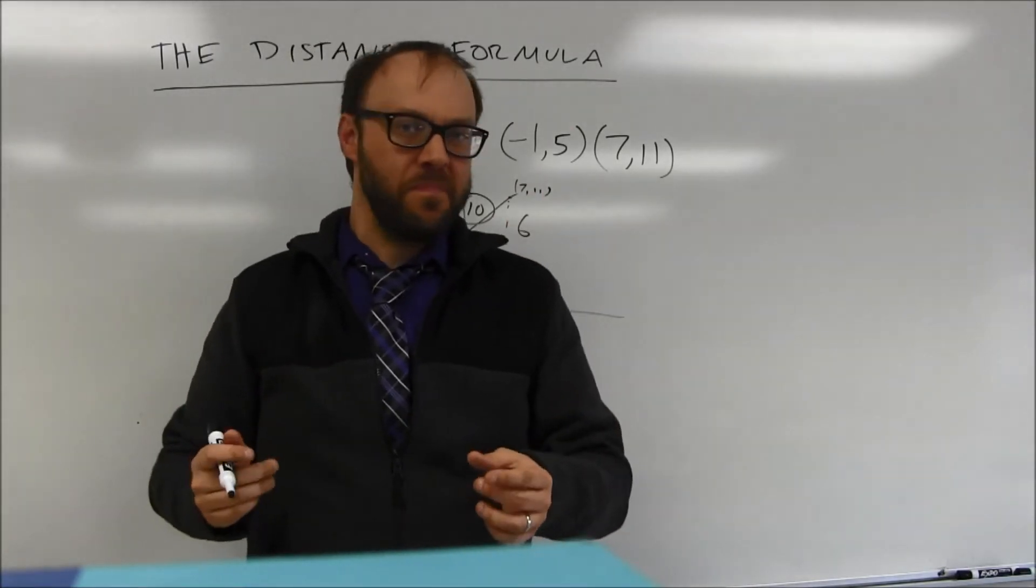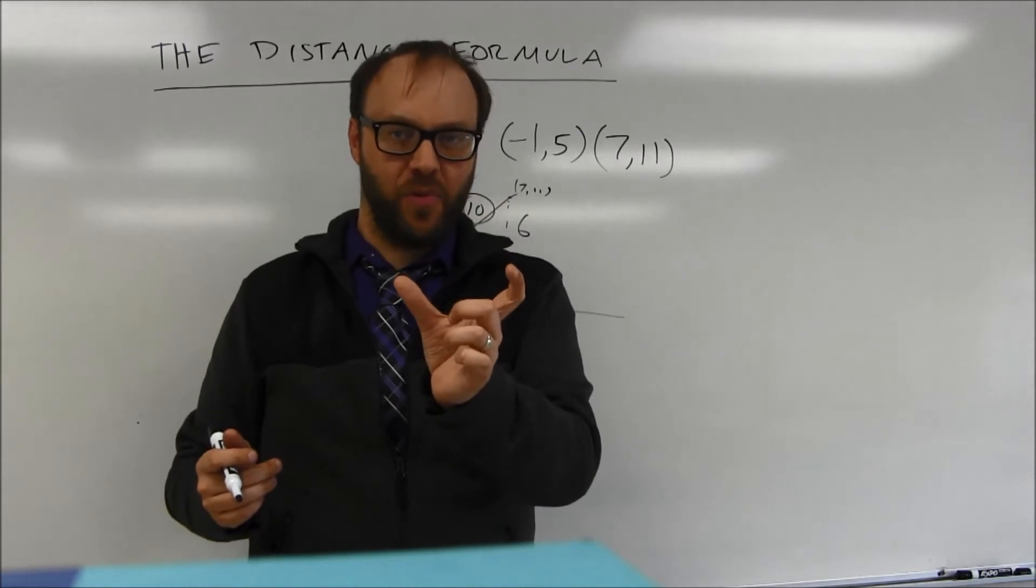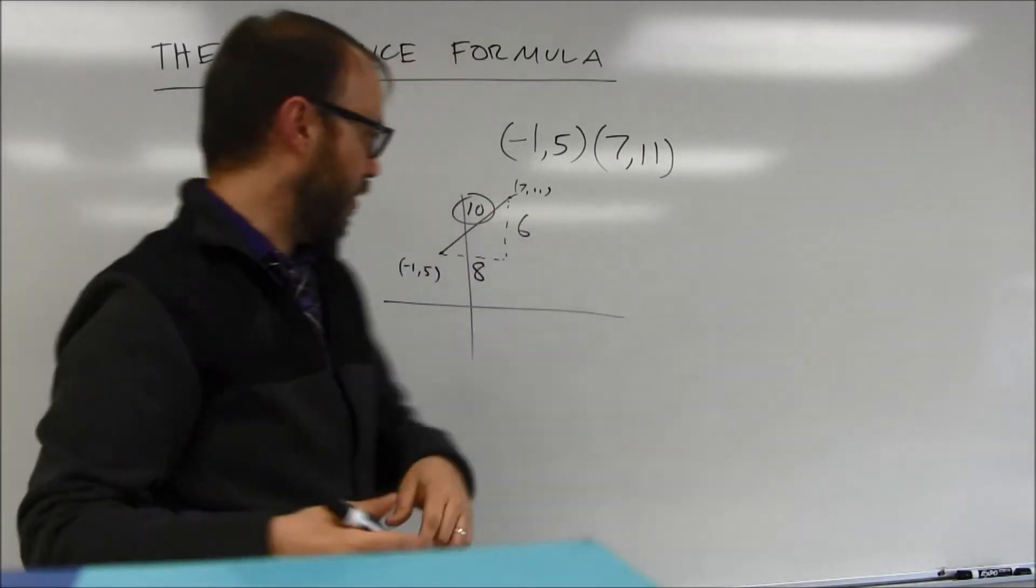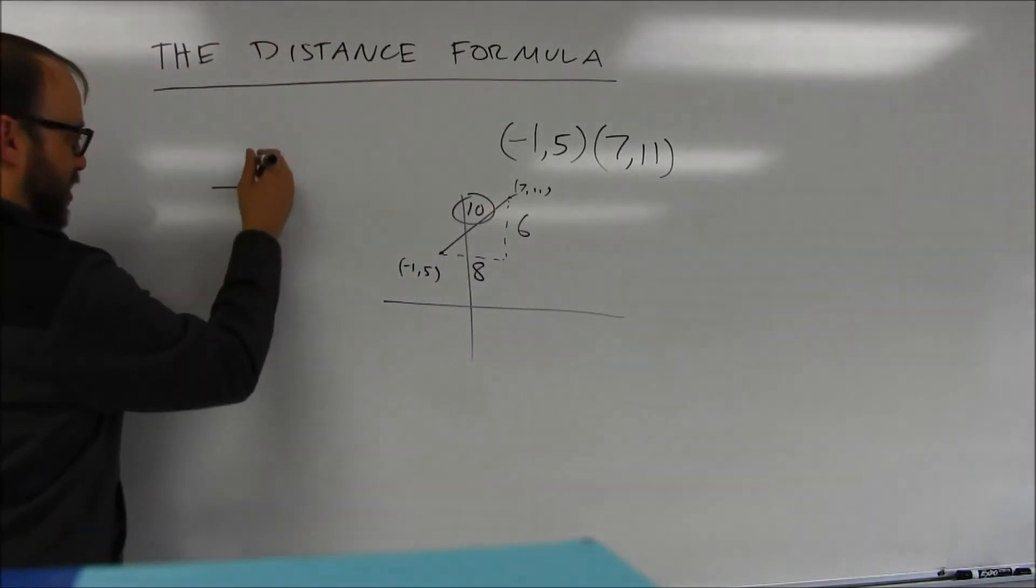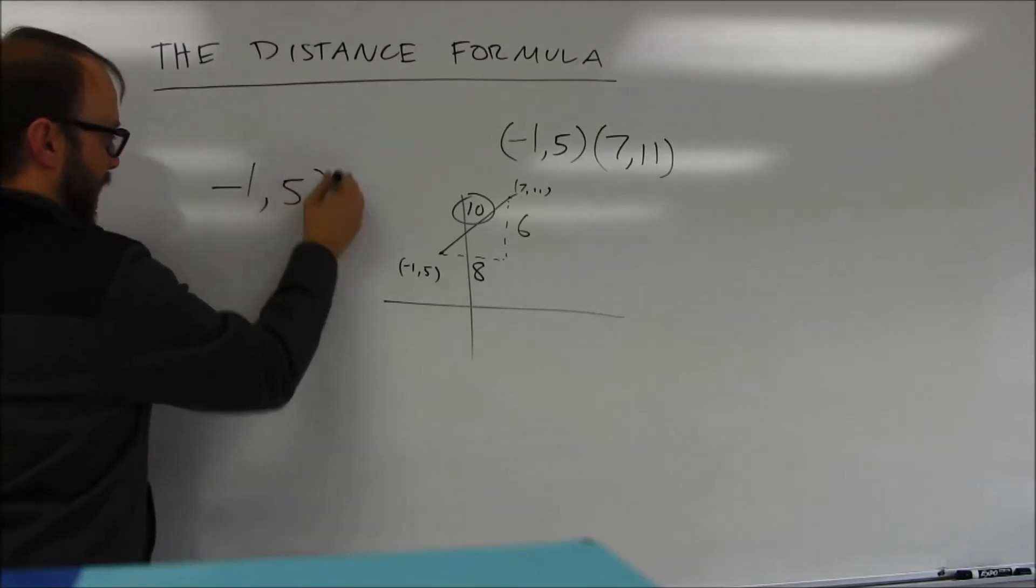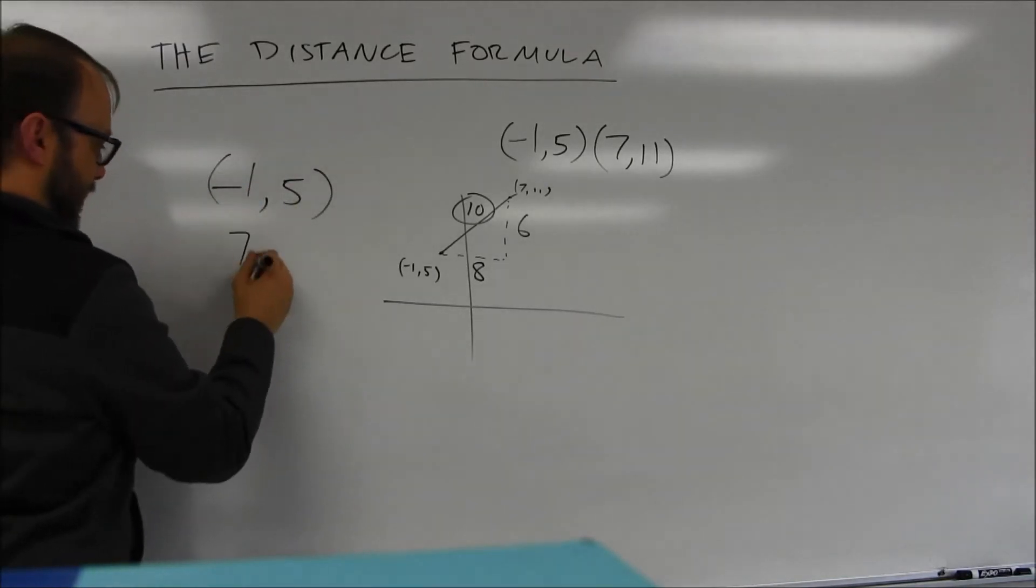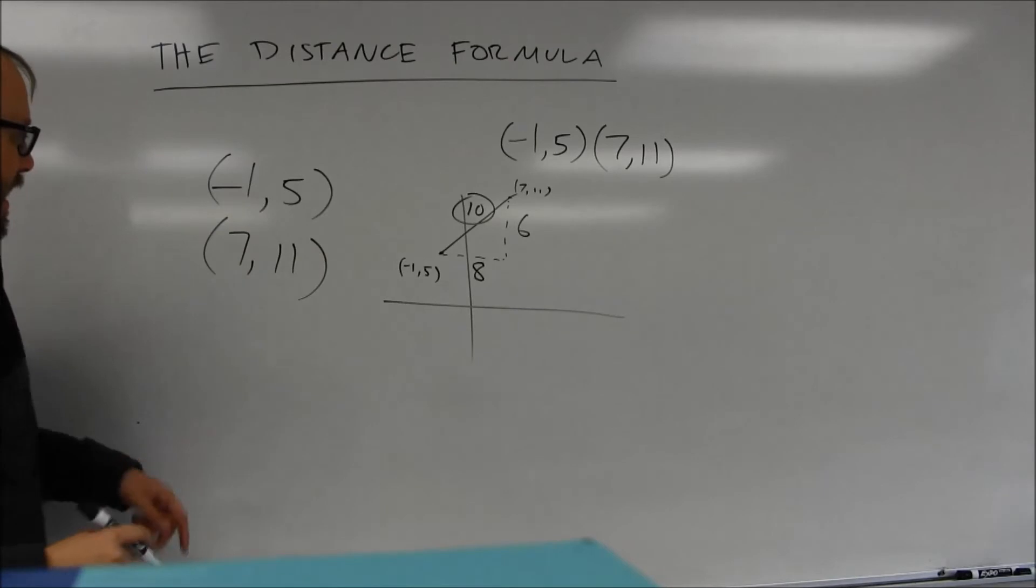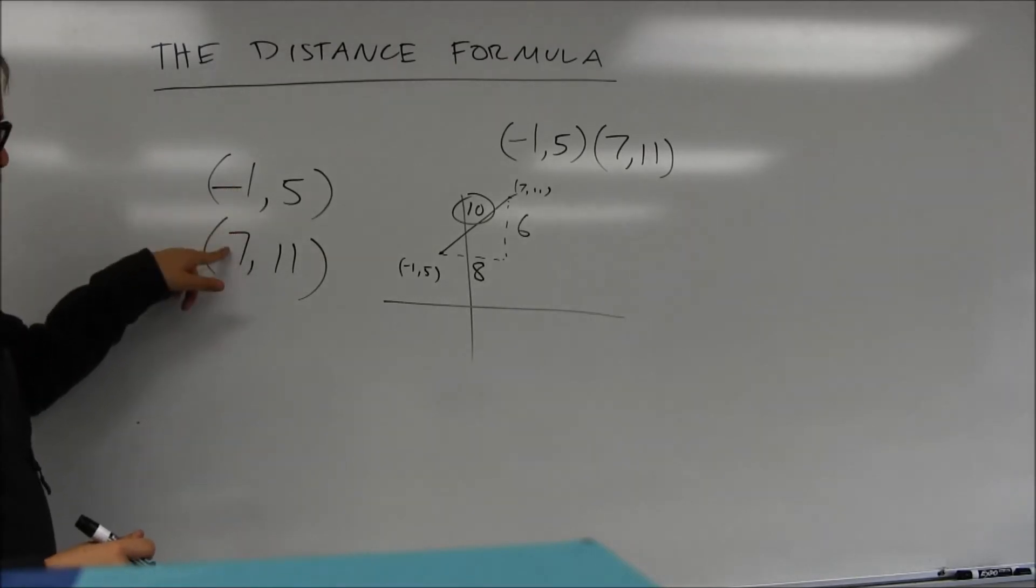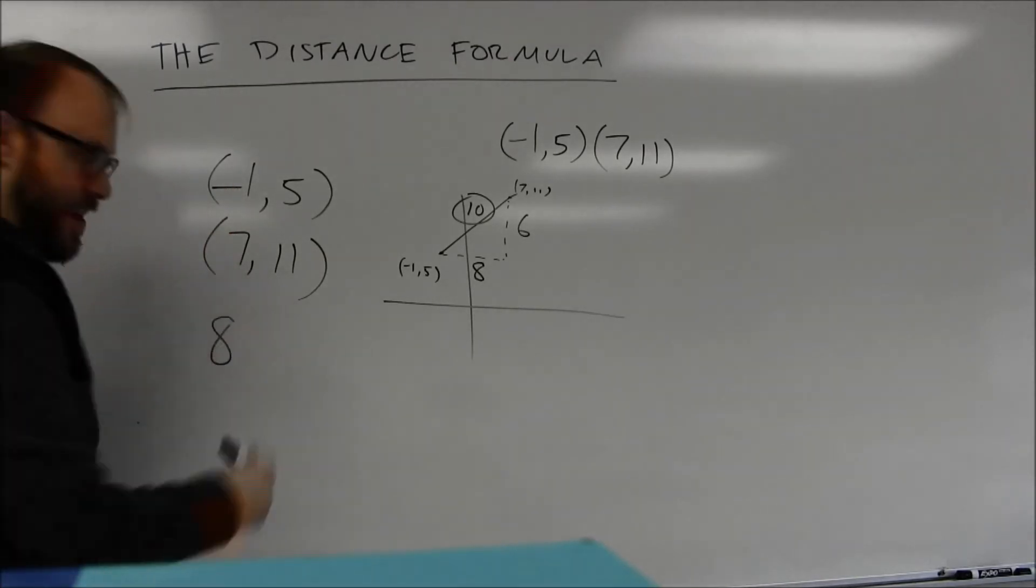Again, what did I do? I looked to see how far apart the x's were, and I looked to see how far apart the y's were. In fact, you may even want to combine it up. You can do something like this, and you can say, how far apart are -1 and 7? They're 8 apart, which is the same thing as taking 7 minus -1.